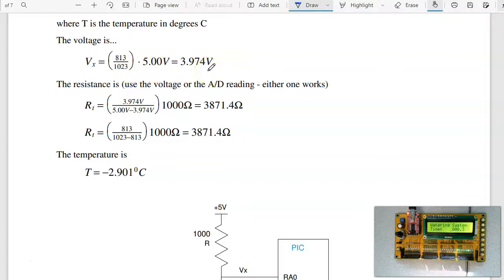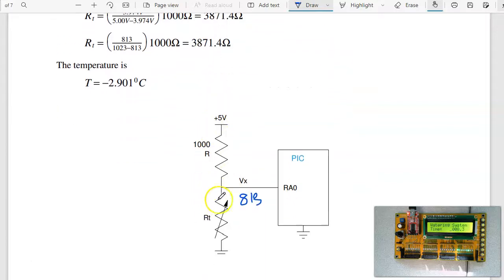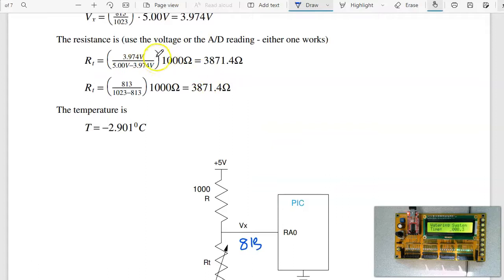If I have a voltage divider, I can calculate the resistance. By voltage division, the voltage is RT over 100 plus RT times 5. Solving backwards, it's the voltage over 5 minus the voltage times 1,000 ohms, 3871 ohms. That also works with raw A to D score. It's the raw A to D reading, 813 over full scale minus the reading times 1,000 ohms. Same answer.